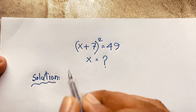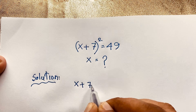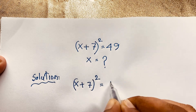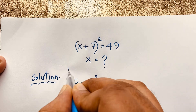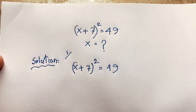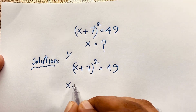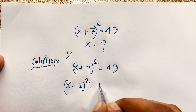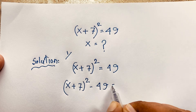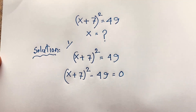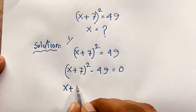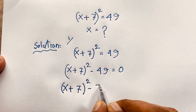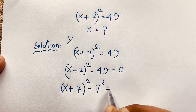Our question is (x + 7)² = 49. I will solve this question using 2 methods. This is our first method. You can see (x + 7)² and I move this 49 to the other side — it will be negative 49. Then (x + 7)² minus 49, which is 7², is equal to 0.